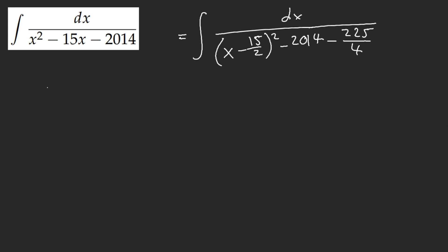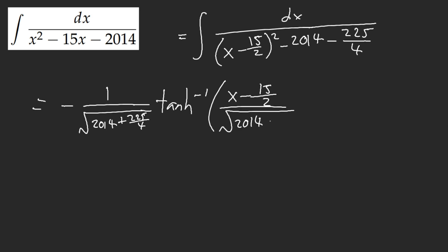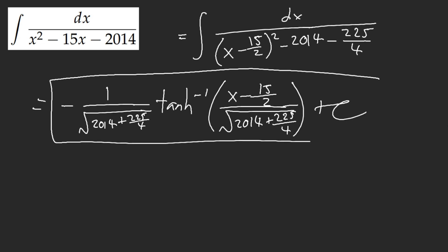Honestly, if they threw this at me, I'd be rude back. You want to give this crap to me? All right, I'll give you a crappy answer: 1 over the square root of (2014 plus 225/4), times inverse tanh of (x minus 15/2) divided by that same square root. Here's my answer. That denominator should be 4. This is how I would give my answer — if they want to give me crap like this, this is the crap I'm going to give them back.